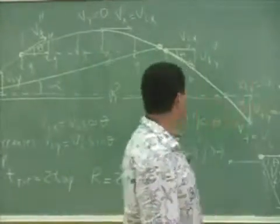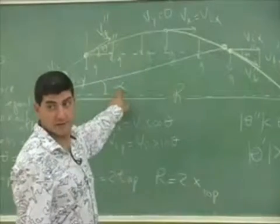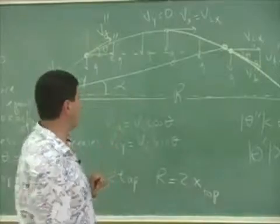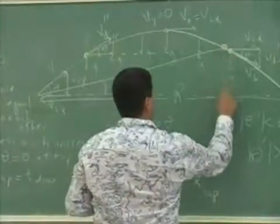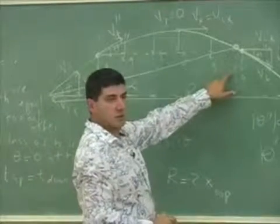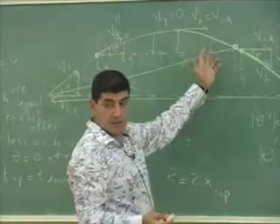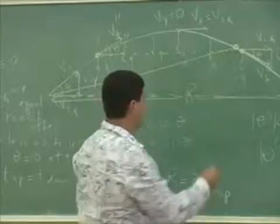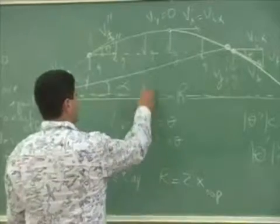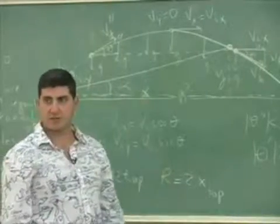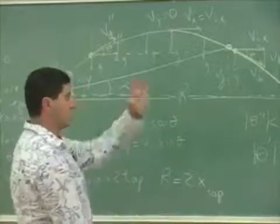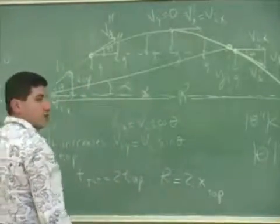To find alpha, take the y-distance the object has traveled, divide it by the x-distance, and then take the inverse tangent of that ratio. Now let's write down all the equations of projectile motion.